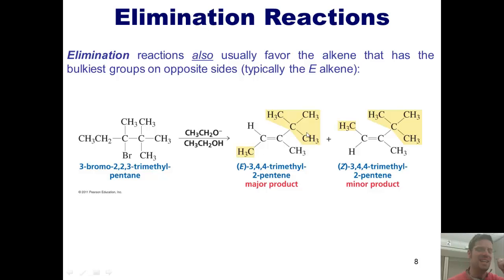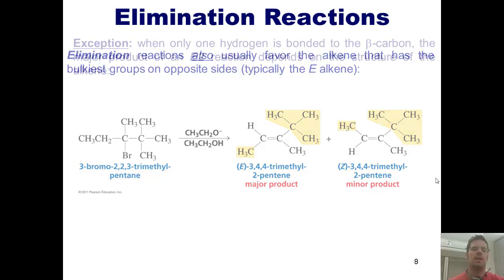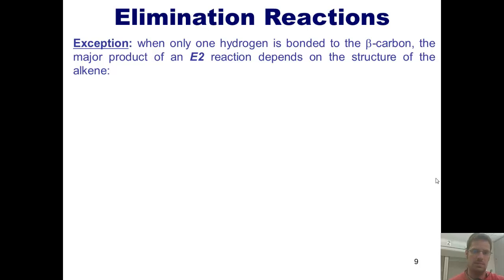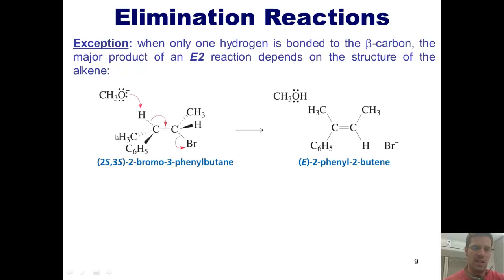I never get tired of that joke. And the reason, of course, is because it's more stable to have the bulkier groups as far away from each other as possible. There are, of course, exceptions. If you have a circumstance when only one hydrogen is attached to the beta carbon, then the major product of the E-2 reaction depends on the structure. Let me show you this example.